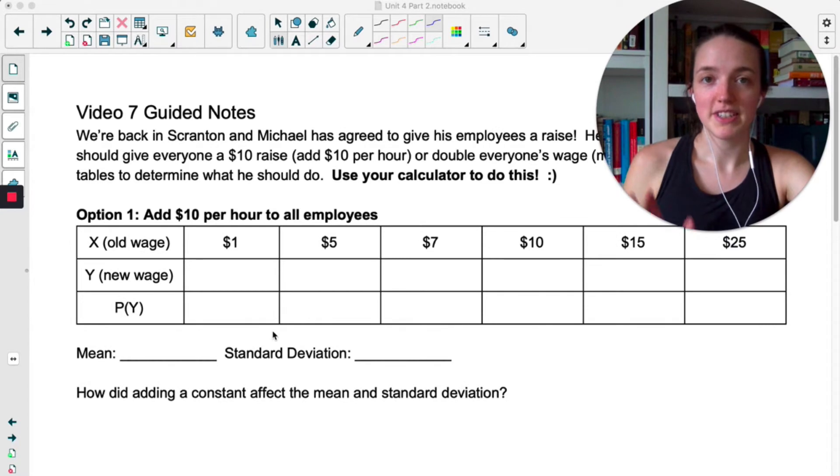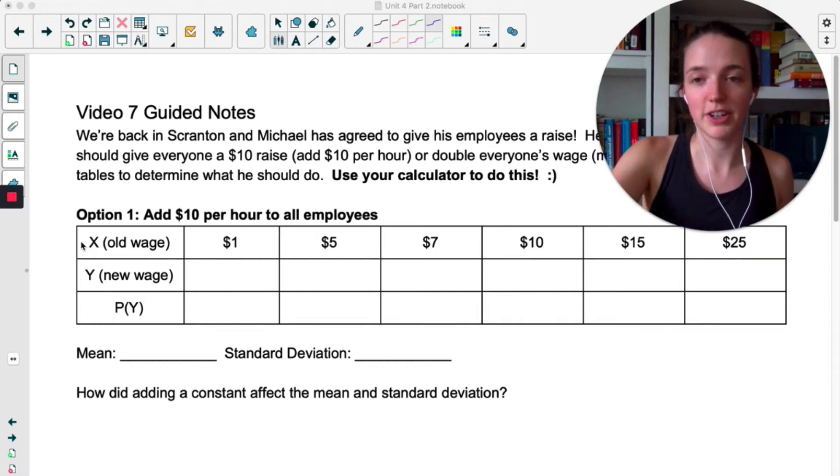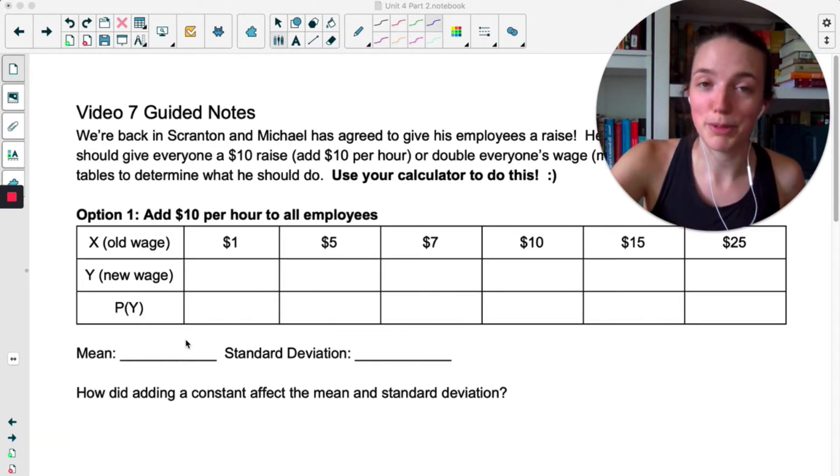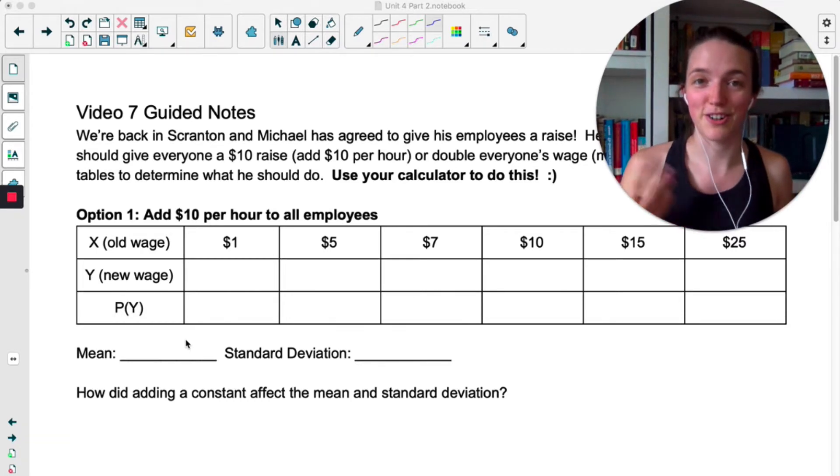Now we're going to be sticking with the same probabilities as last time. X is going to be the variable that represents the old wage and Y will represent the new wage, so you're going to start by filling out all the new wages and then you're going to calculate the mean and the standard deviation, but you should not be doing this by hand, you should do it in your calculator.